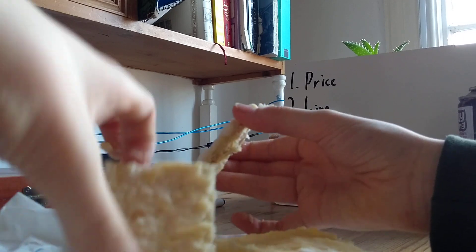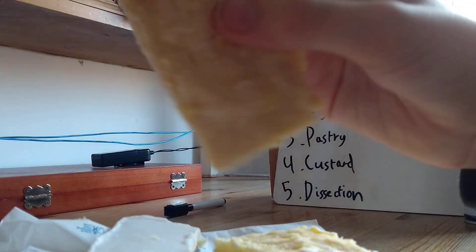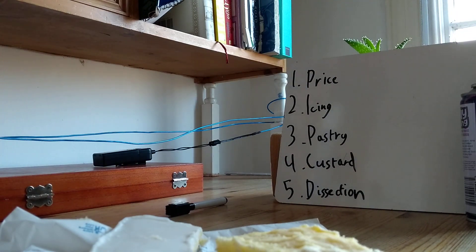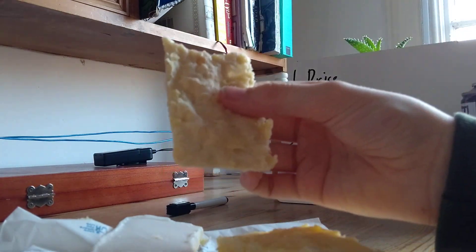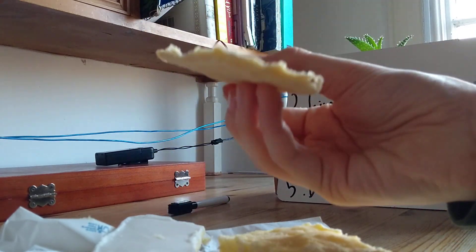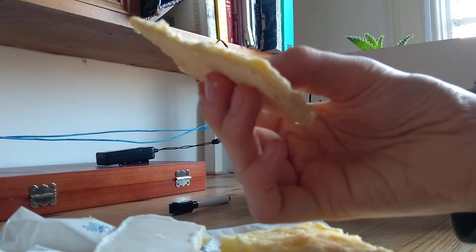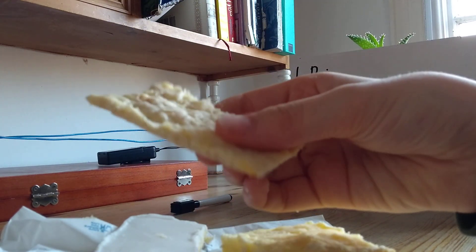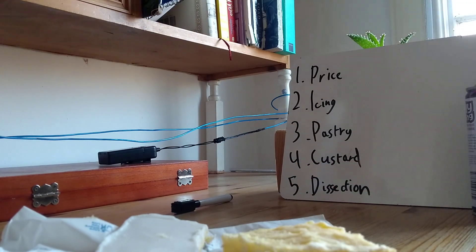And then we're going to do pastry. So, this looks nice and flaky. Not much crunch, but that's what you expect. Nice and chewy. It's got air bubbles. So, yeah. That's very good.